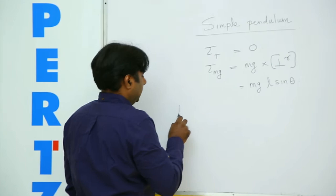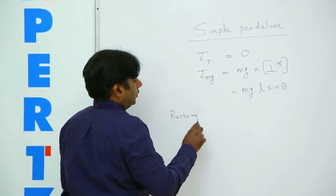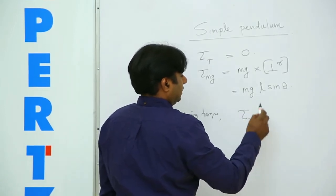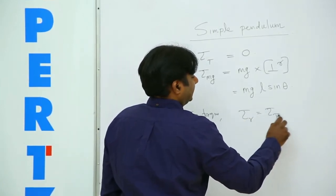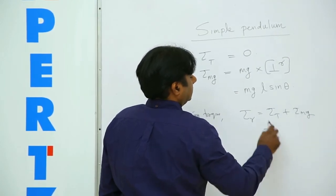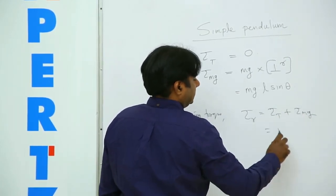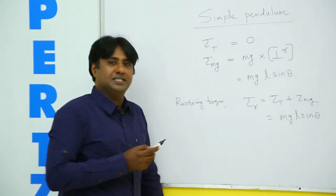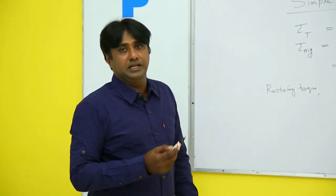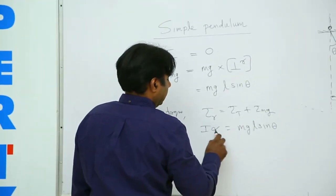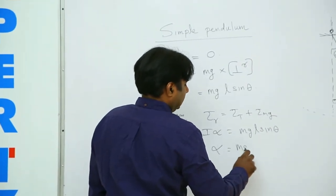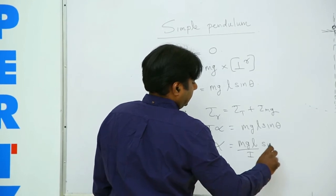Out of the two forces acting, only one is providing the torque. So what I can write is restoring torque provided to the bob, tau restoring, is equal to torque due to tension plus torque due to MG. This is zero, you have MG, MGL sin theta. So what I am getting is tau r equal to MGL sin theta. But torque equal to I alpha, all of you know torque is I alpha. So I alpha equal to MGL sin theta. I get then alpha equal to MGL divided by I into sin theta.